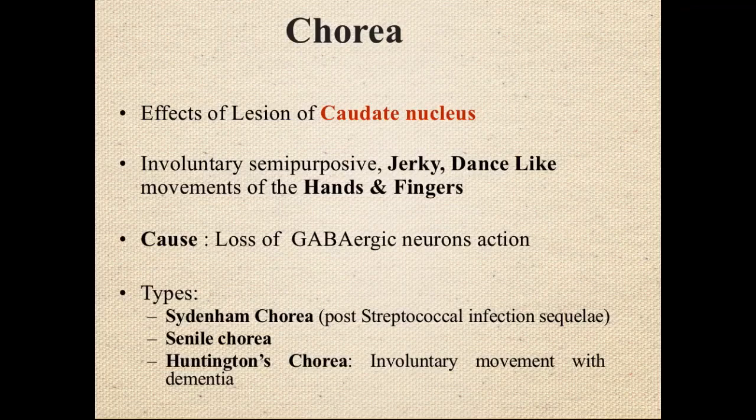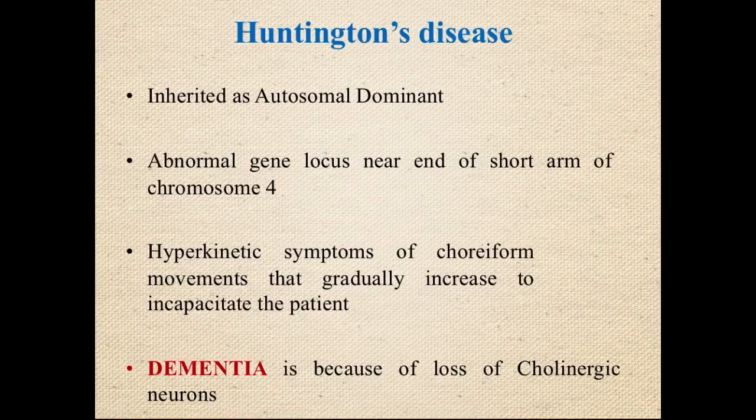Chorea can result from several causes: Sydenham's chorea (post-streptococcal infection, e.g., following a throat infection), senile chorea (due to aging), and Huntington's chorea — involuntary movements accompanied by dementia. Huntington's disease is transmitted by autosomal dominant inheritance.